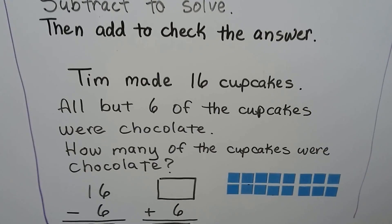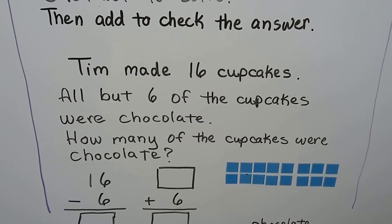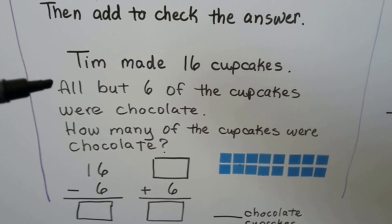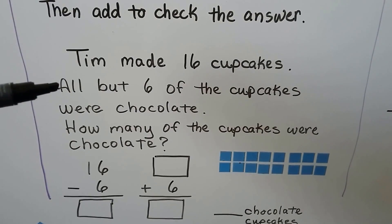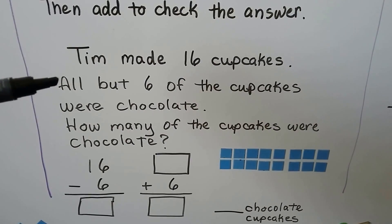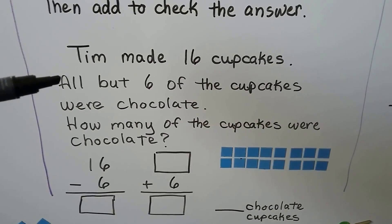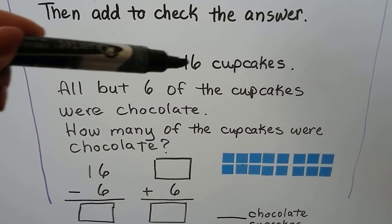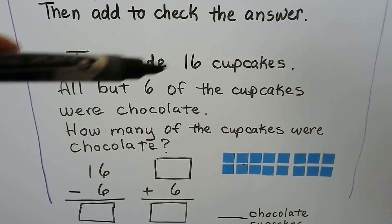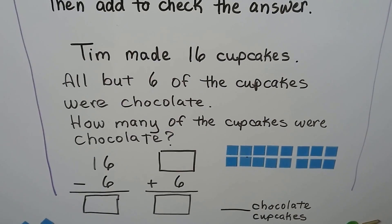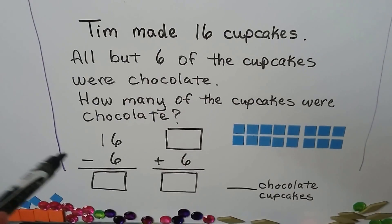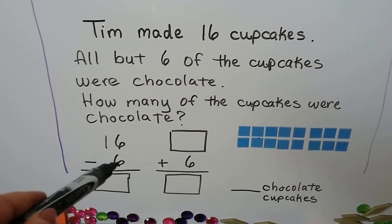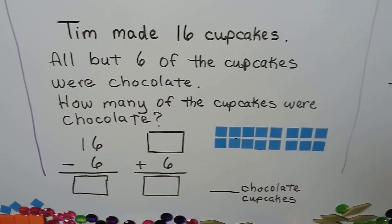Let's try another one. Subtract to solve, then add to check the answer. Tim made sixteen cupcakes. All but six of the cupcakes were chocolate. How many of the cupcakes were chocolate? We need to find the difference between six and sixteen, so we'll do sixteen minus six.